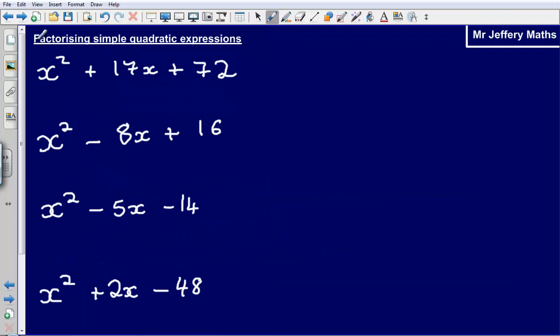So here I've got x squared plus 17x plus 72. So this is what we call a quadratic expression. These are really important at A-level. They come up all the time and it's really important that you are comfortable with dealing with these things. So what we're going to do is we need to factorise this or put it in brackets.